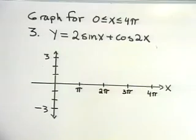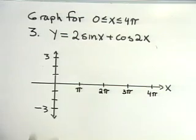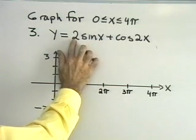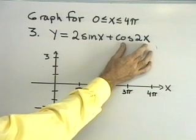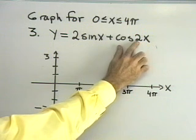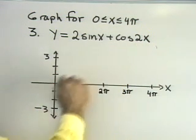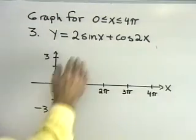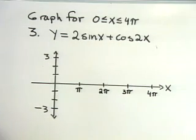I want to try one more. Problem number 3: y is equal to 2 sine x plus cosine 2x. I'll set y1 equal to 2 sine x — a sine curve with amplitude 2 that goes through two complete cycles between 0 and 4π — and y2 equal to cosine 2x — a cosine curve with amplitude 1 and period π, going through four complete cycles. Let's go to the graphing calculator first to get an idea of what this graph looks like.